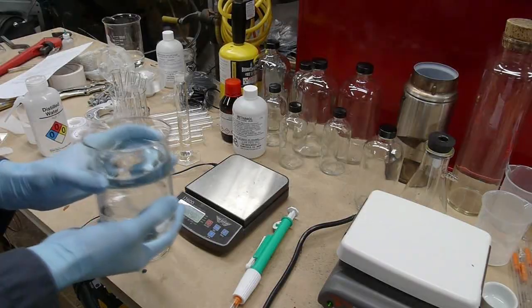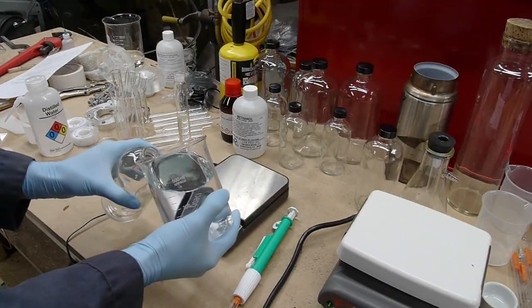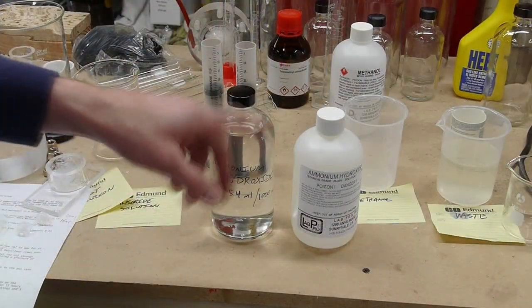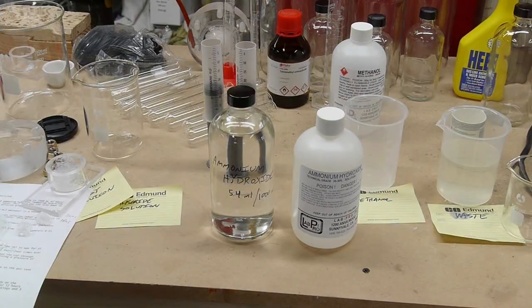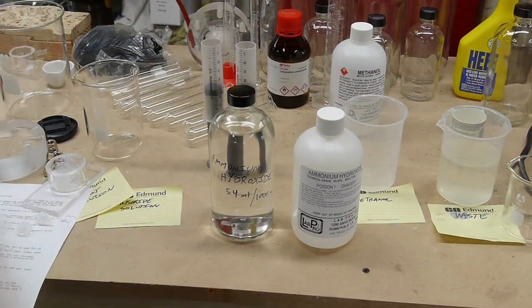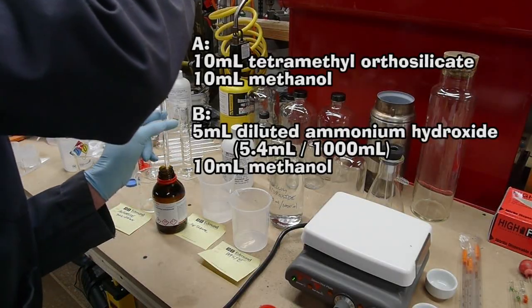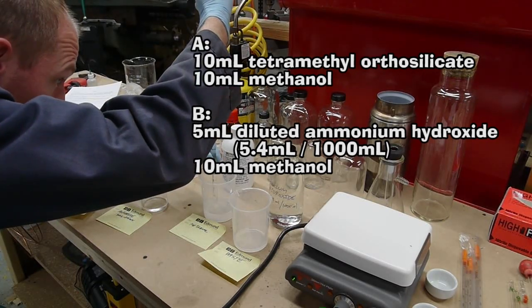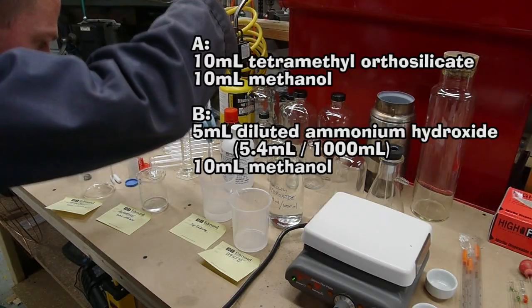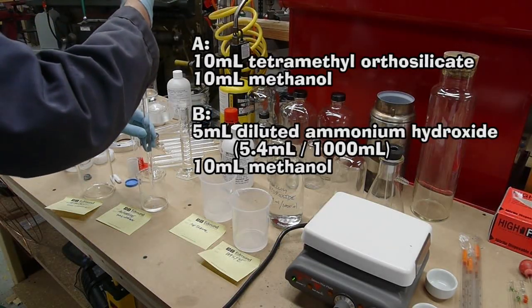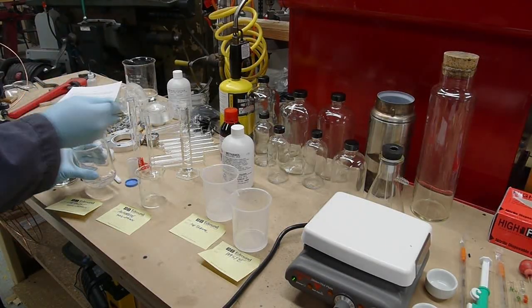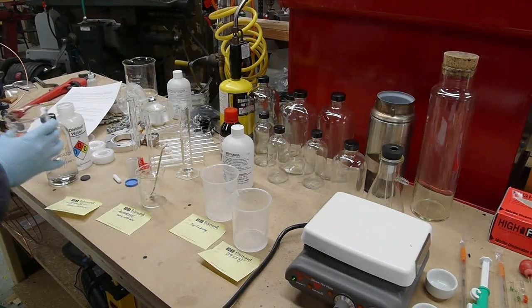So I made up a stock solution of this ammonium hydroxide and I didn't have a volumetric flask, so I actually measured the water out by mass. And then used a pipette to measure the ammonium hydroxide. Okay, so after I had the stock solution of ammonium hydroxide, I mixed up the solution A on the instructions here, which is a combination of the tetramethyl orthosilicate and methanol. And then solution B, which is a combination of this ammonium hydroxide stock solution and methanol. Then you mix solution A and solution B together and pour this mixture into a mold.